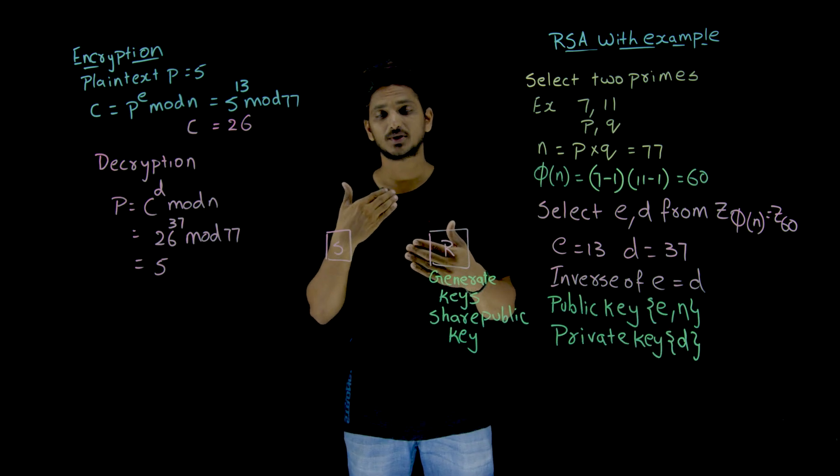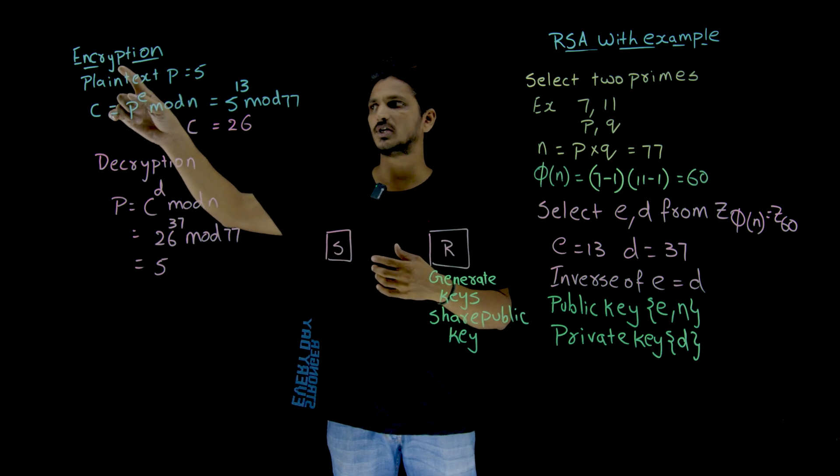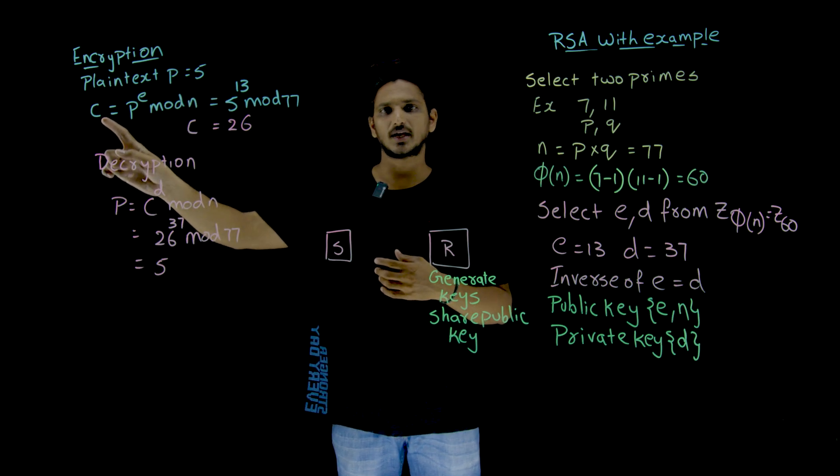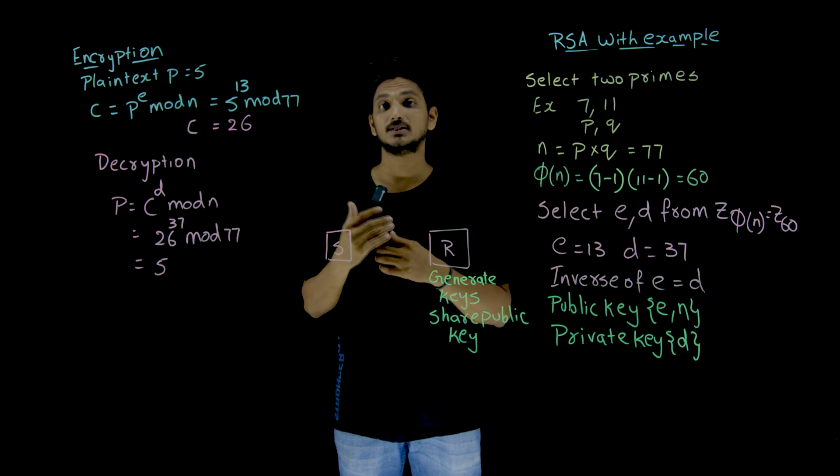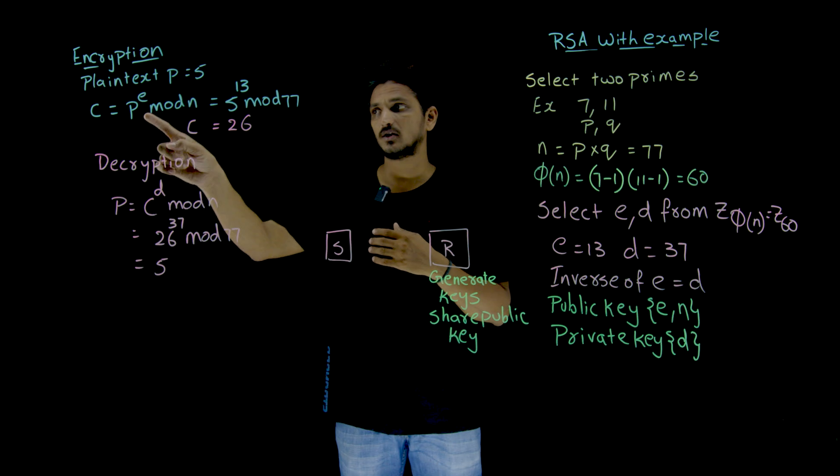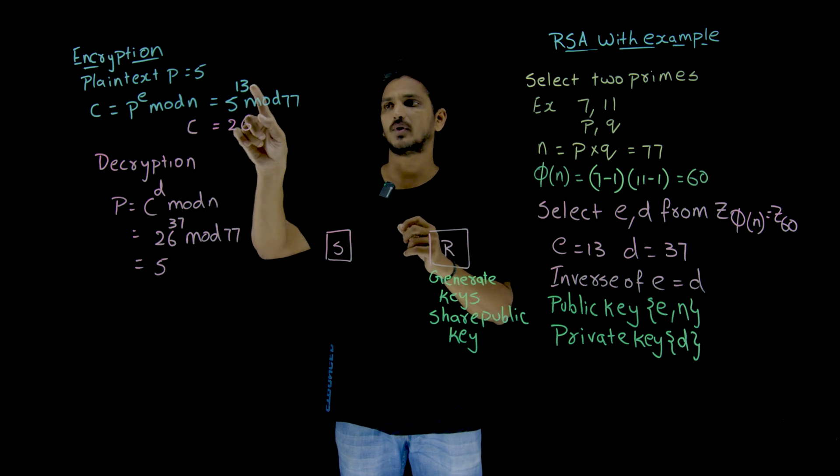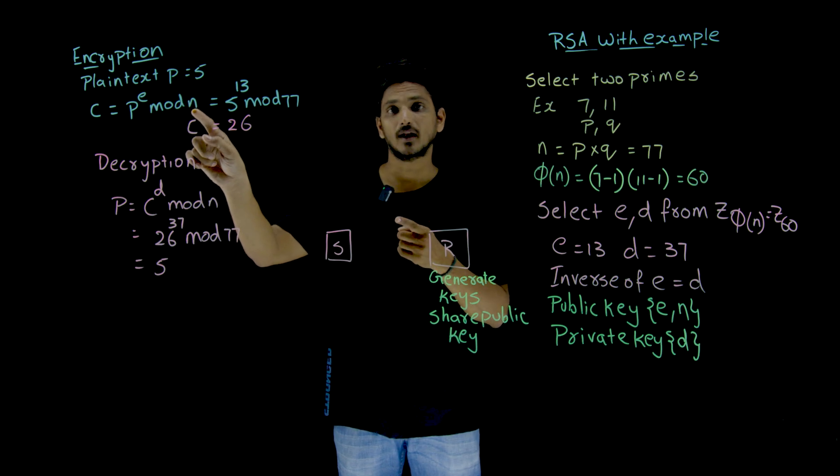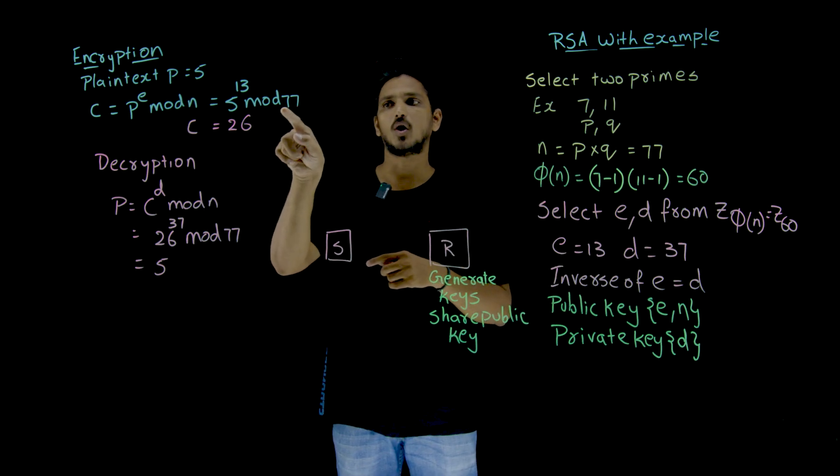Now, what happens during the encryption stage and decryption stage? During the encryption stage, take the plaintext P equal to 5. To generate the ciphertext C, we use C equals P^E mod n. You have to calculate the exponential. You can do it in polynomial time using an algorithm called fast exponentiation. 5^13 mod 77. The point you need to understand here is we are using mod n. E and D are generated on Z_Phi(n), but still we are using that on mod n.